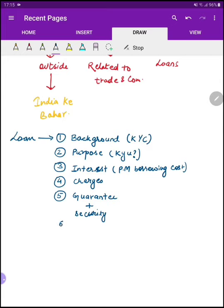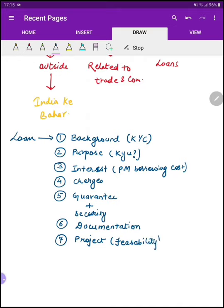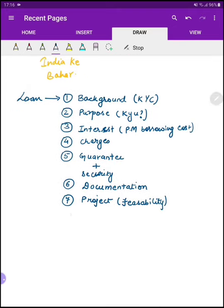इतना discuss होने के बाद, सारी चीज़ें पता लगने के बाद, अगर आप हाँ बोलोगे तो bank वाला भी बोलेगा ठीक है। फिर आपसे सारी formalities और documentation के forms भरवाए जाएंगे। Documentation देखने के बाद पूरा documents लेंगे, फिर आपसे project लेंगे — which is basically to study the feasibility — जिसमें सारे projections होते हैं कि कब-कब कितना-कितना profit कमाएंगे और क्या वो loan की installments और interest cover कर पाएगा। सारा project बनने और analysis होने के बाद last में आपको sanction दे दी जाएगी।